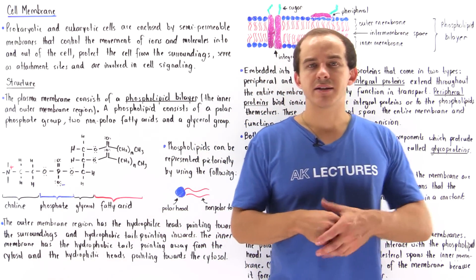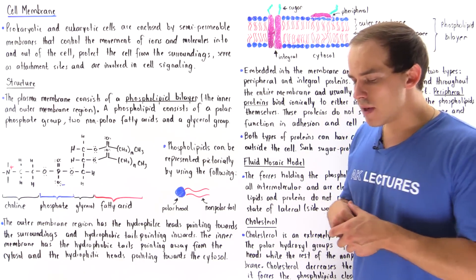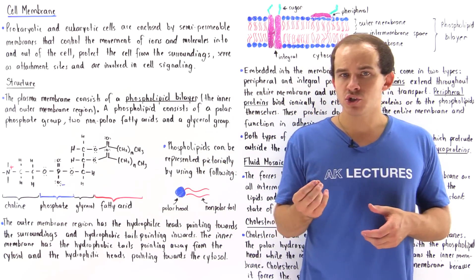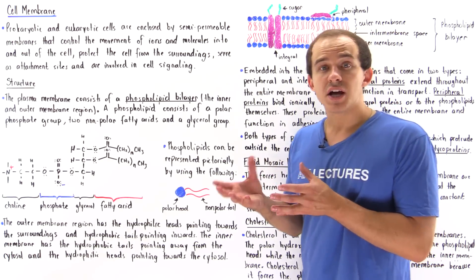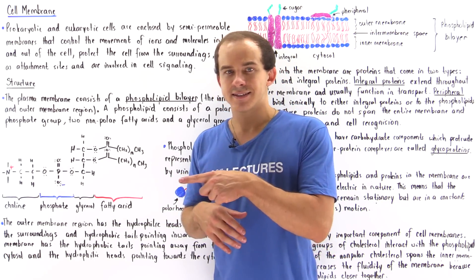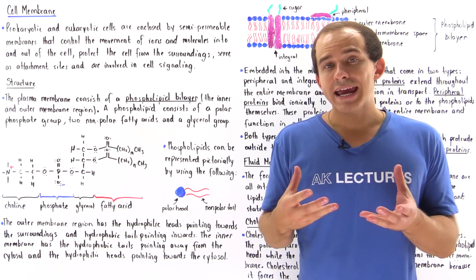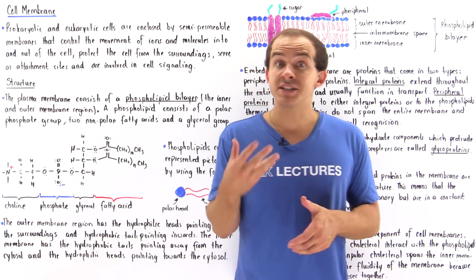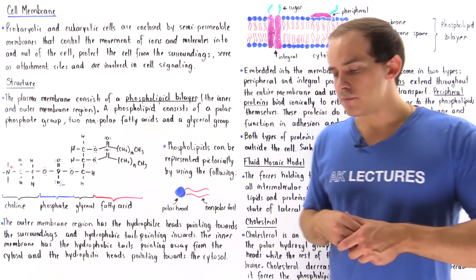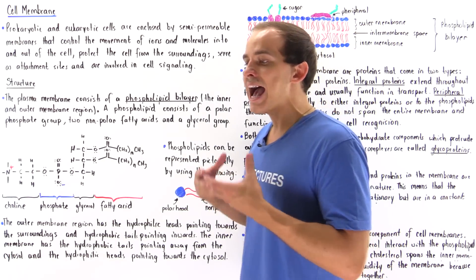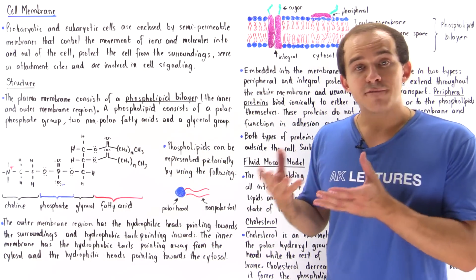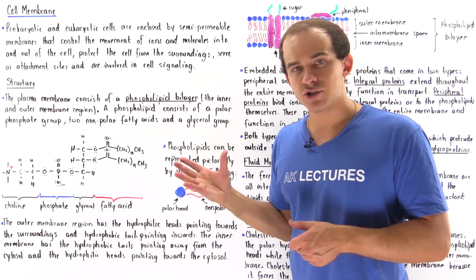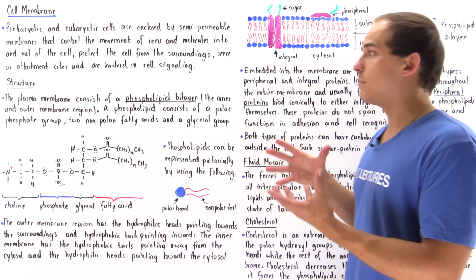Both prokaryotic and eukaryotic cells are enclosed in a semi-permeable membrane known as the cell membrane or the plasma membrane. The plasma membrane functions in several important ways. It allows ions and molecules to travel into and out of the cell. It creates an internal environment that allows organelles to function effectively and efficiently, and it protects the cell from the outside environment. The cell membrane also creates attachment points for other molecules and other cells, and finally it functions in cell signaling and cell communication.